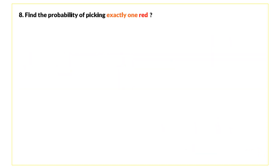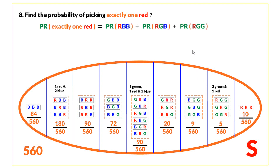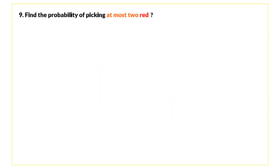Question eight: find the probability of picking exactly one red — no more and no less. The three relevant disjoint events are: one red and two blue, one red and one blue and one green, or two green and one red. The probability is the sum of these individual probabilities, which equals 0.49.